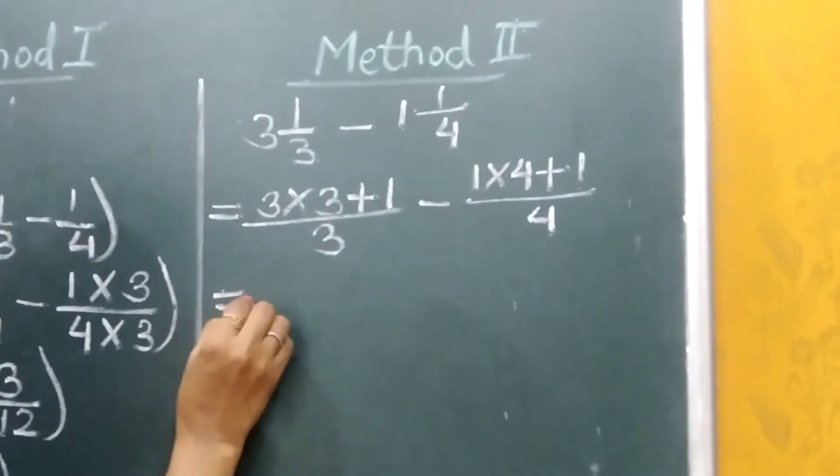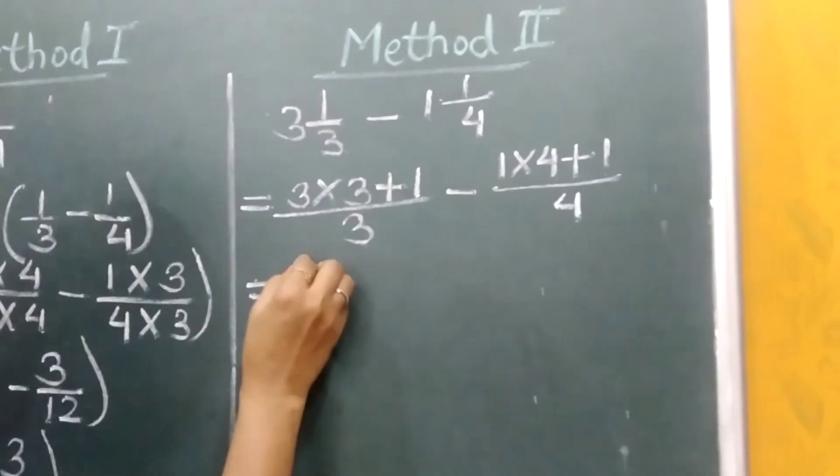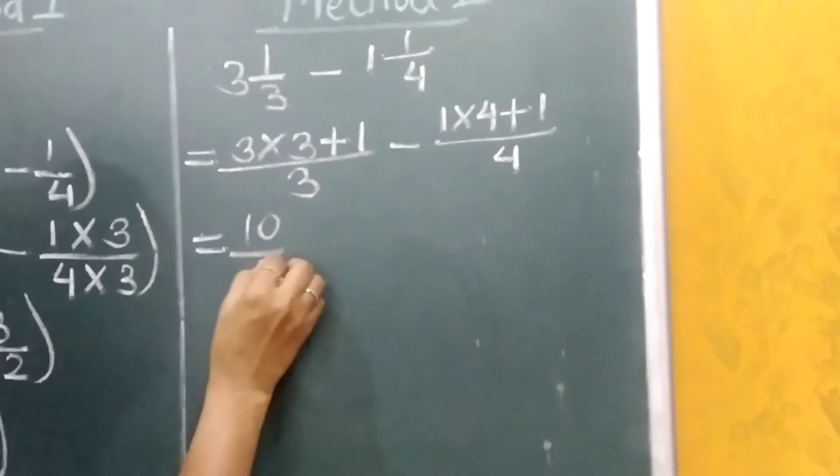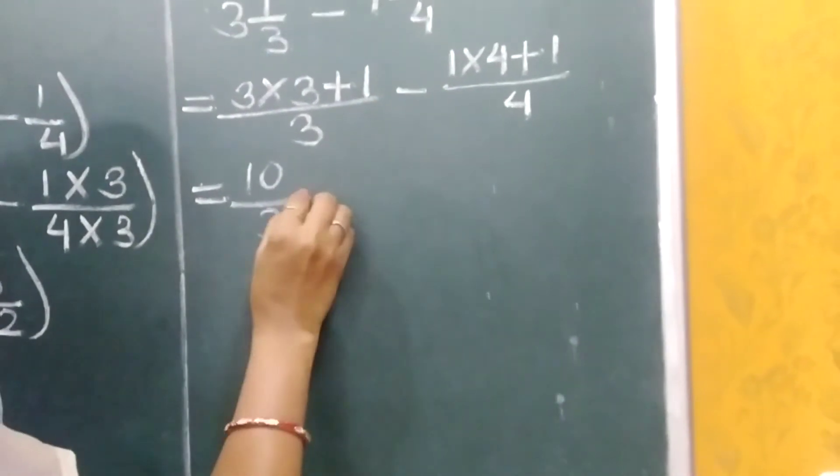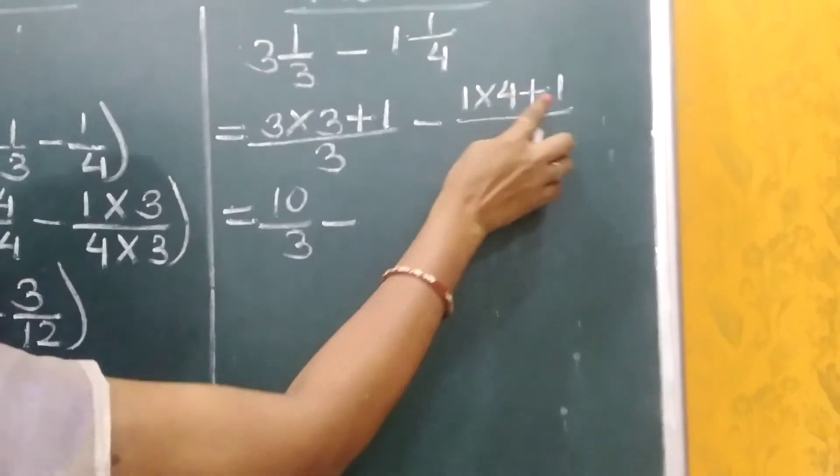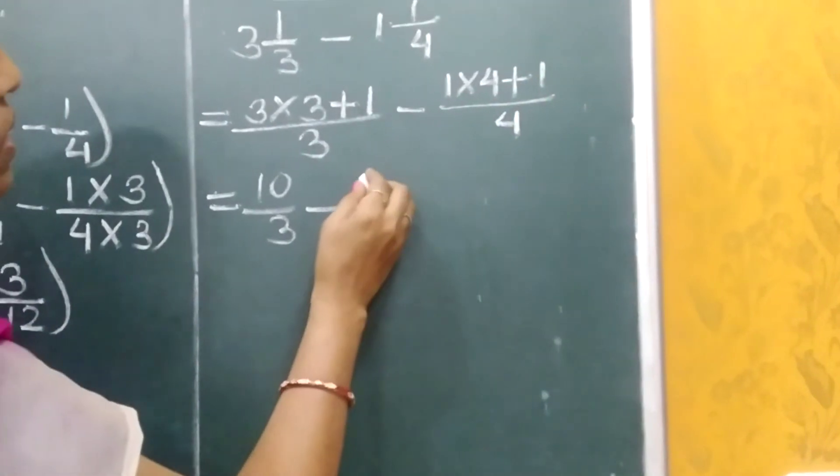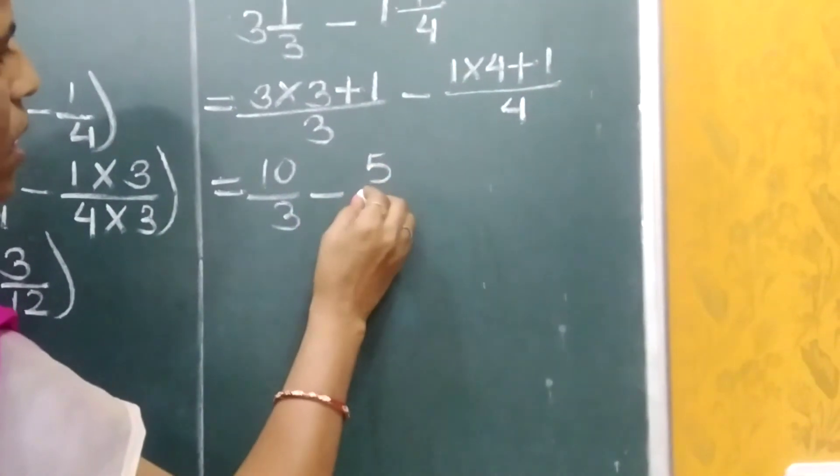So here we get 3 threes are 9, 9 plus 1, 10 upon 3 minus 4 ones are 4 plus 1, 5 upon 4.